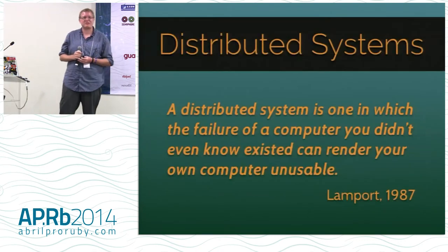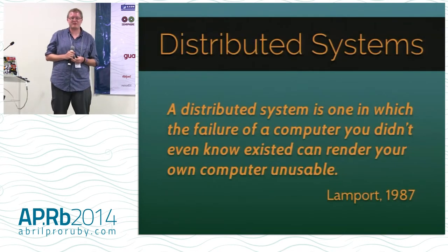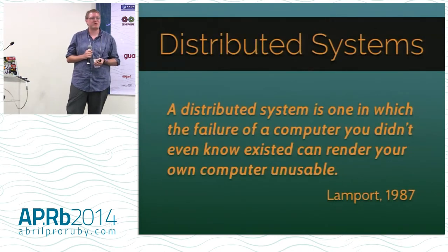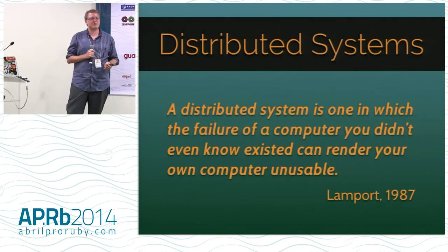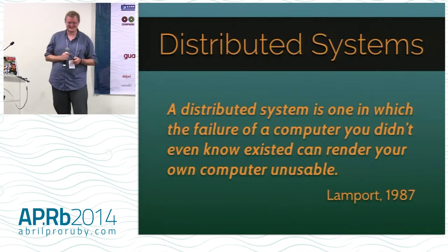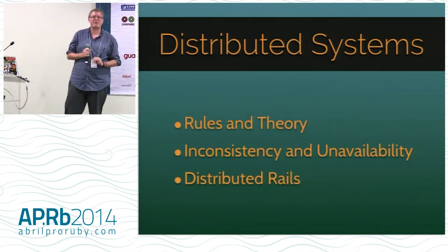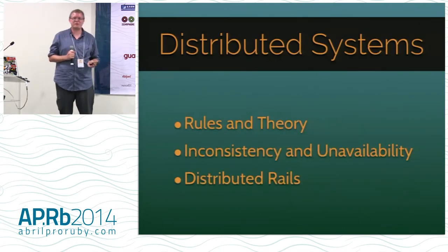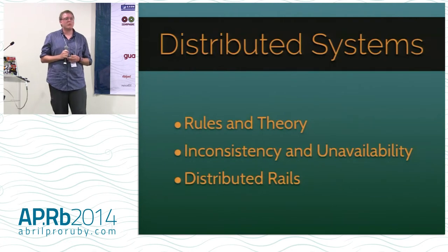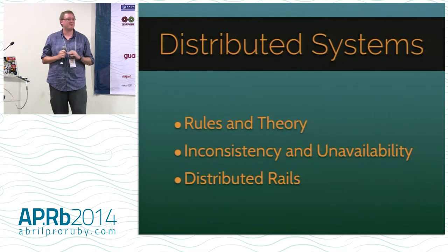A classic quote about distributed systems is: they're computer systems where the failure of a computer you don't know exists can break your computer. I'm going to talk about the rules and theory for how distributed systems operate, what inconsistency and unavailability mean, and how to make your Rails app a better distributed system.